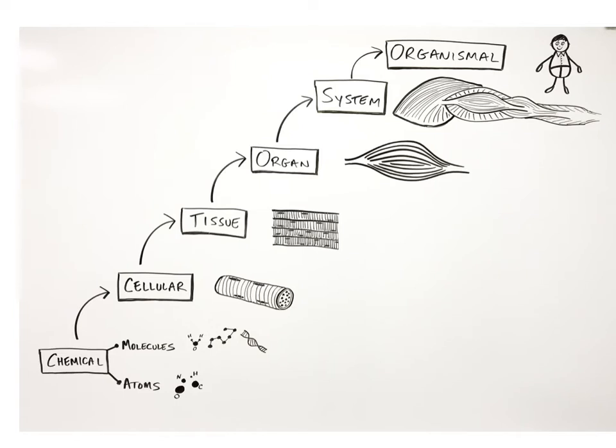The fifth level of organization is the system level, also called the organ system level. A system is composed of groups of related organs that share a common function. The muscles of the posterior arm as shown here are just one part of the muscular system. As you'll learn, there is a strong degree of interrelationships between the systems, such as the gas exchange interactions between the cardiovascular and respiratory systems.